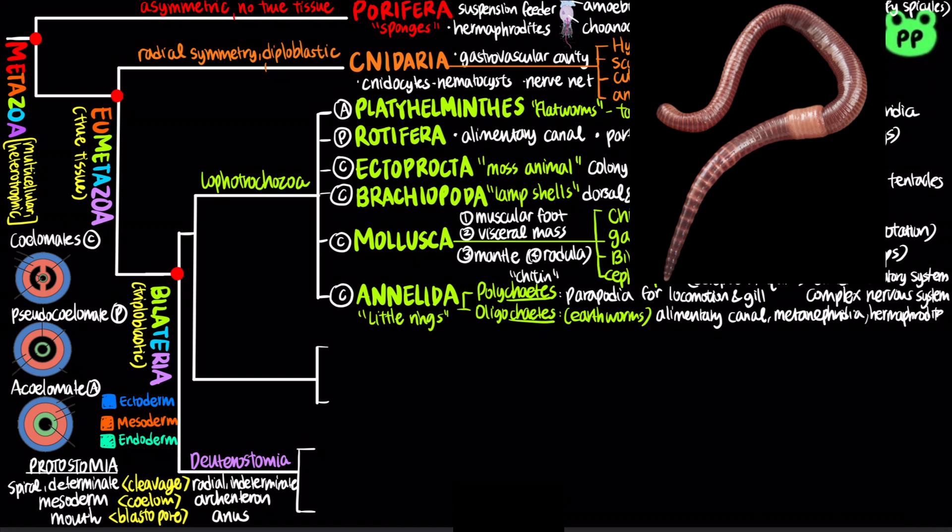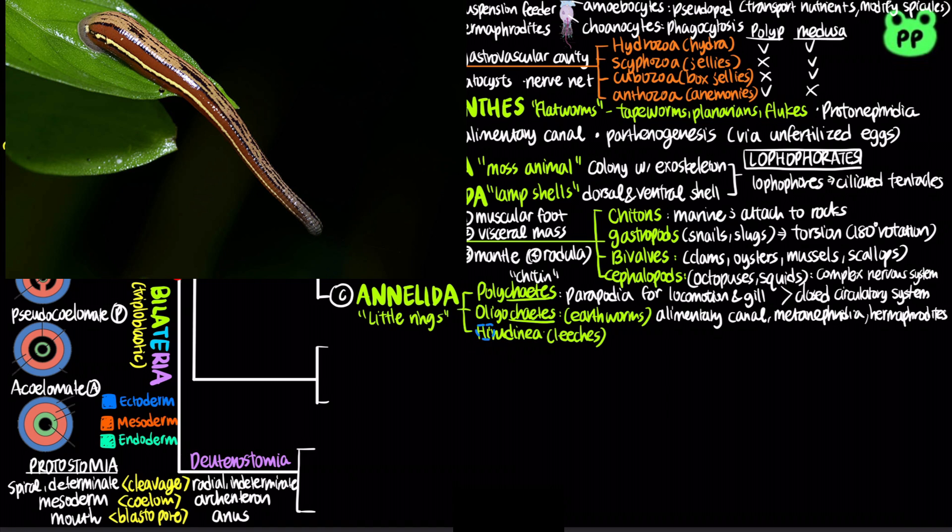Members of the class Hirudinea are blood-sucking parasites such as leeches, which secrete a chemical called hirudin to prevent blood from coagulating.